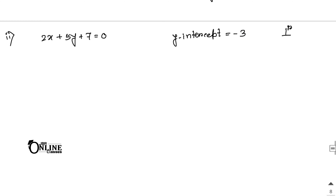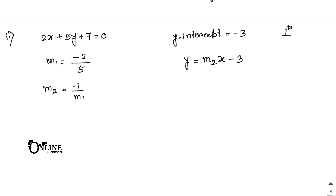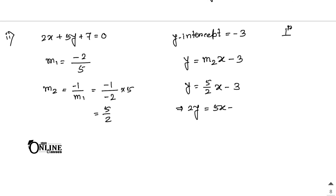Sum 13(ii): find the equation of a line perpendicular to 2x plus 5y plus 7 equal to 0 with y-intercept minus 3. The slope m1 equals minus 2/5, so the perpendicular slope m2 equals 5/2. Using y equals m2·x plus c with c equals minus 3: y equals 5/2 x minus 3, which gives 5x minus 2y minus 6 equal to 0 as the final answer.